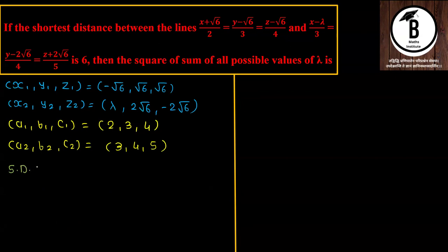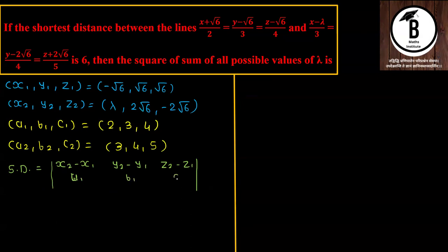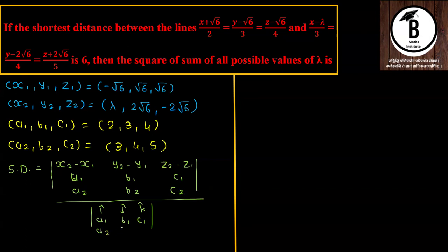Shortest distance (SD) formula — write it as a determinant: the numerator is the 3×3 determinant with top row (x₂−x₁, y₂−y₁, z₂−z₁), then rows a₁ b₁ c₁ and a₂ b₂ c₂. The denominator is the magnitude of the determinant of i j k with rows a₁ b₁ c₁ and a₂ b₂ c₂.